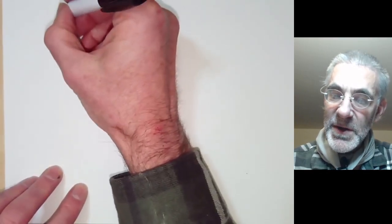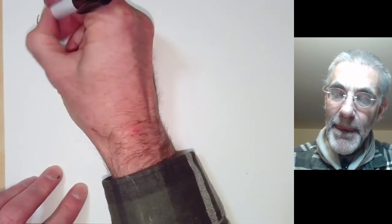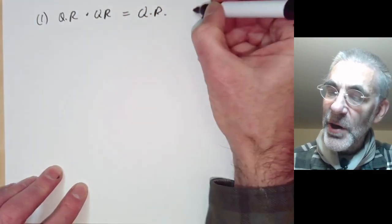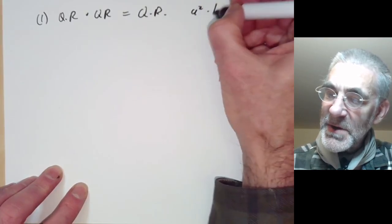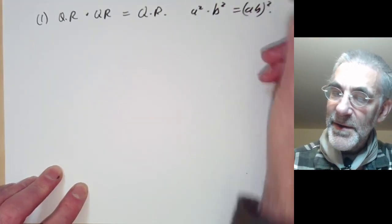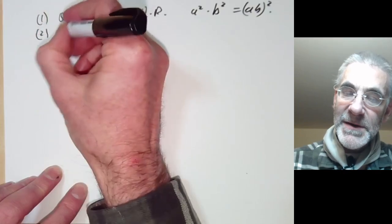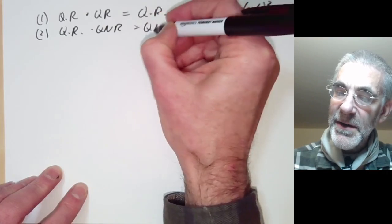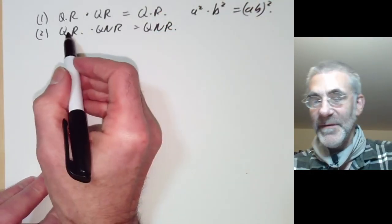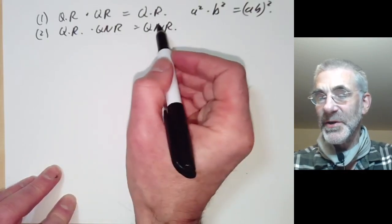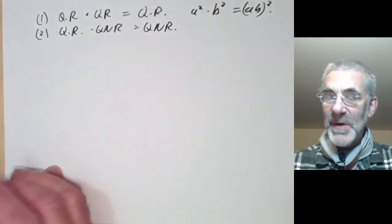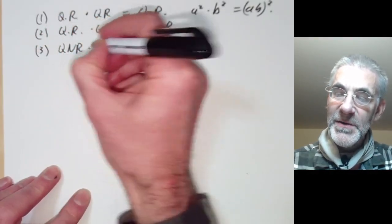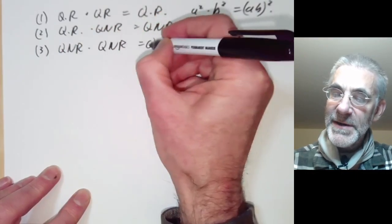We notice that a quadratic residue times a quadratic residue is a quadratic residue — this is obvious because a squared times b squared is ab squared. Secondly, a quadratic residue times a quadratic non-residue is a quadratic non-residue, for much the same reason. A more subtle property is that a quadratic non-residue times a quadratic non-residue is a quadratic residue.